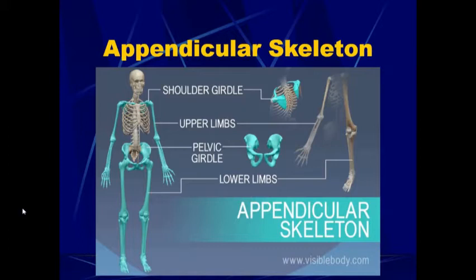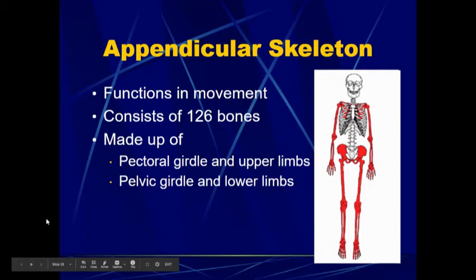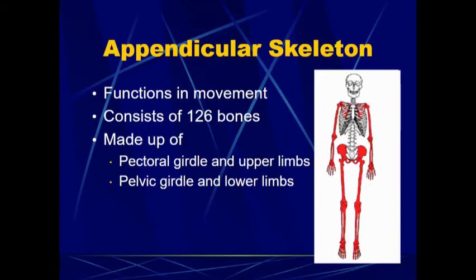The other division of the skeleton is the appendicular skeleton. The function of the appendicular skeleton is movement. There are 126 bones in the appendicular skeleton. This would be your arms and your legs, as well as your shoulders and your hips, because those are providing an attachment point for the arms and the legs.